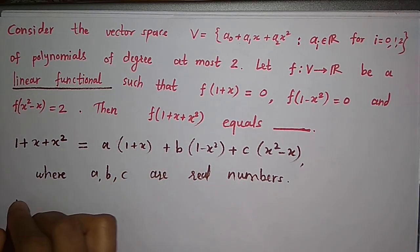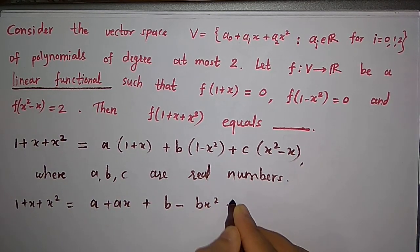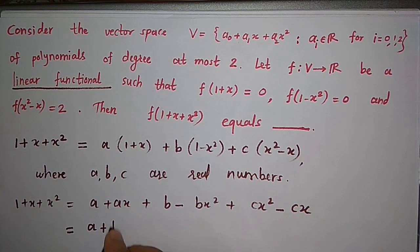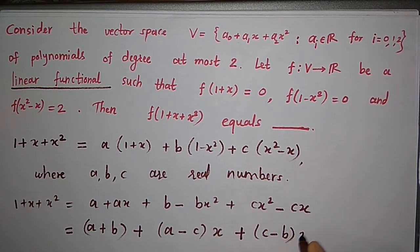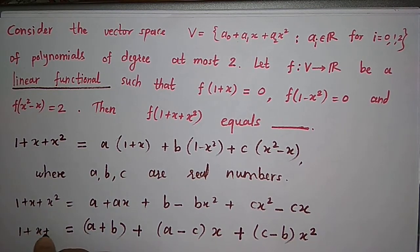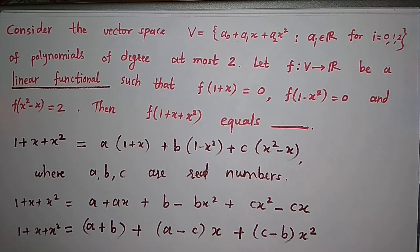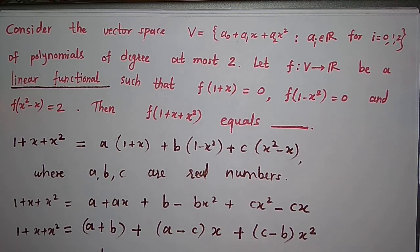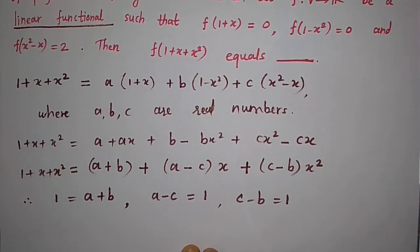Now we simplify: 1+x+x² = a + ax + b − bx² + cx² − cx, which equals (a+b) + (a−c)x + (c−b)x². Comparing like powers of x, the constant term gives a+b = 1, the coefficient of x gives a−c = 1, and the coefficient of x² gives c−b = 1.